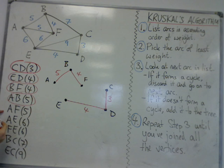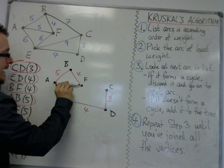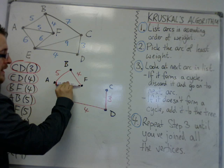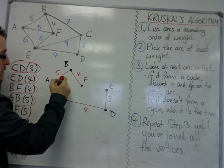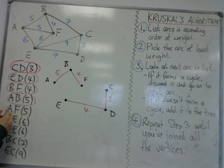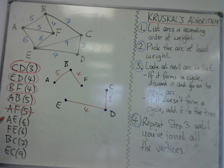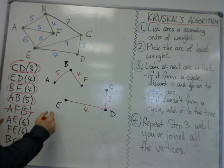Then I've got AF. Now, if I look at AF, that will definitely create a cycle, because I'll have a cycle ABFA. So that is one that I'm going to discard. So I draw a line through it, making sure it's clear that I've discarded it. And then I go for the next one. And I've got AE.